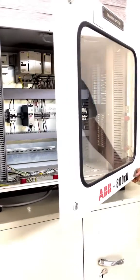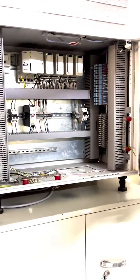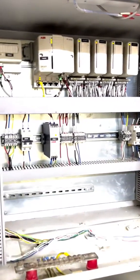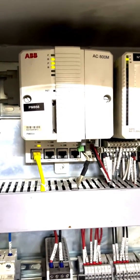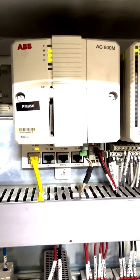This is your ABB DCS control panel. As you can see, this is your ABB 800XA controller. The model of this controller is PM856, and this is a standalone controller.